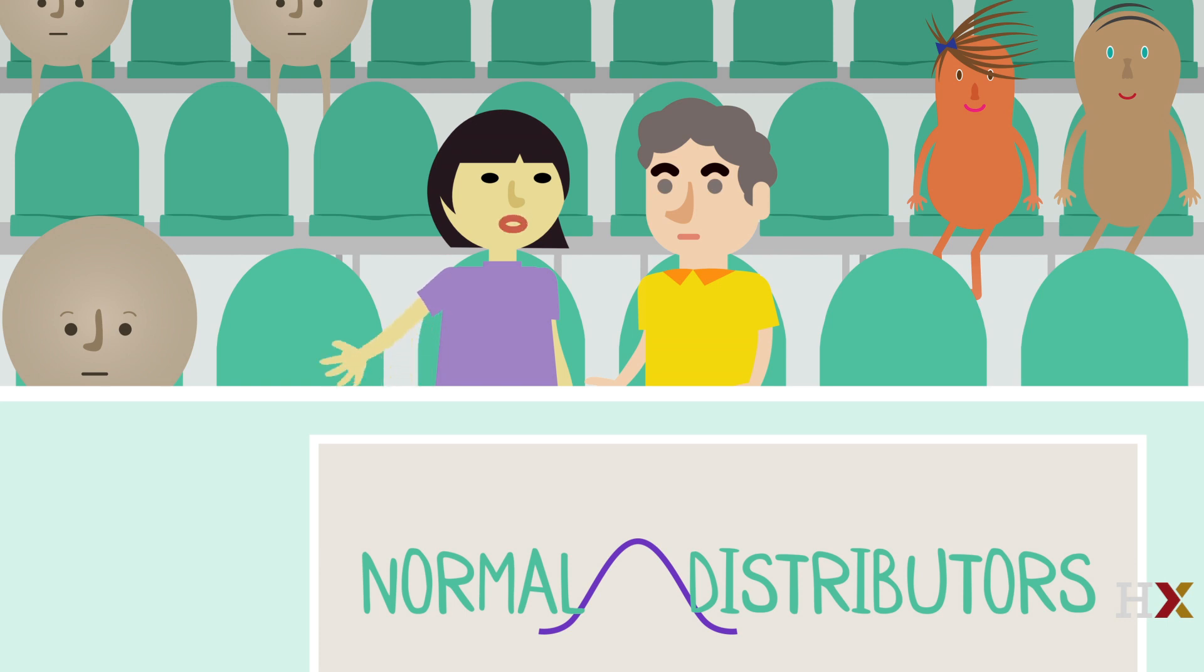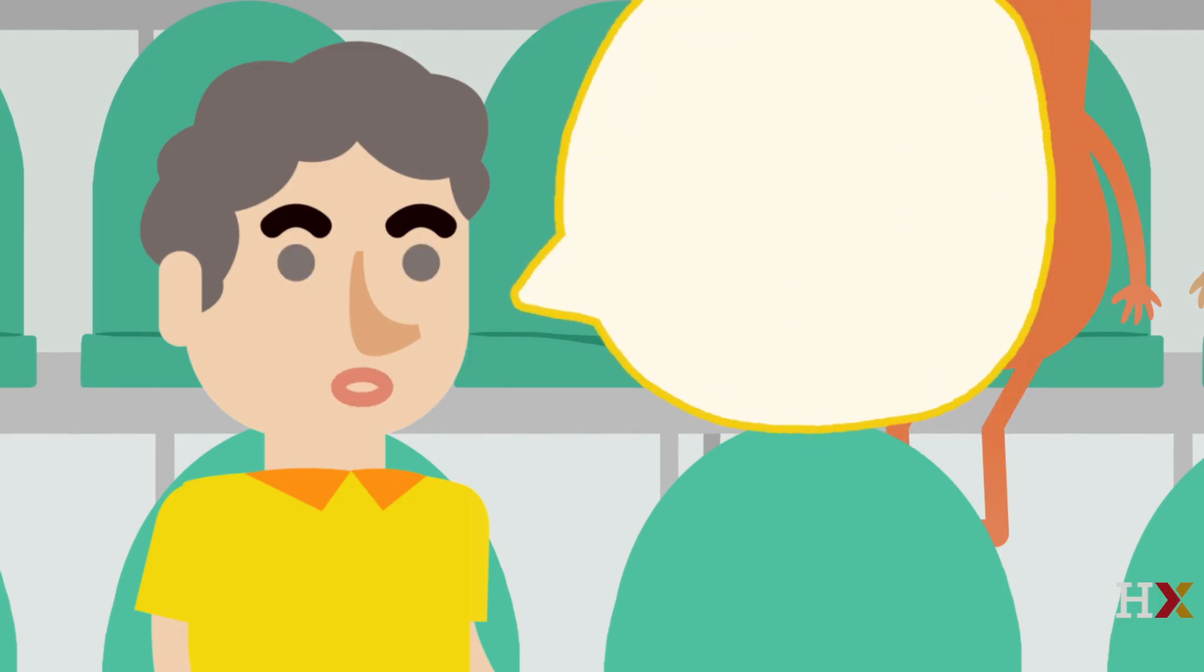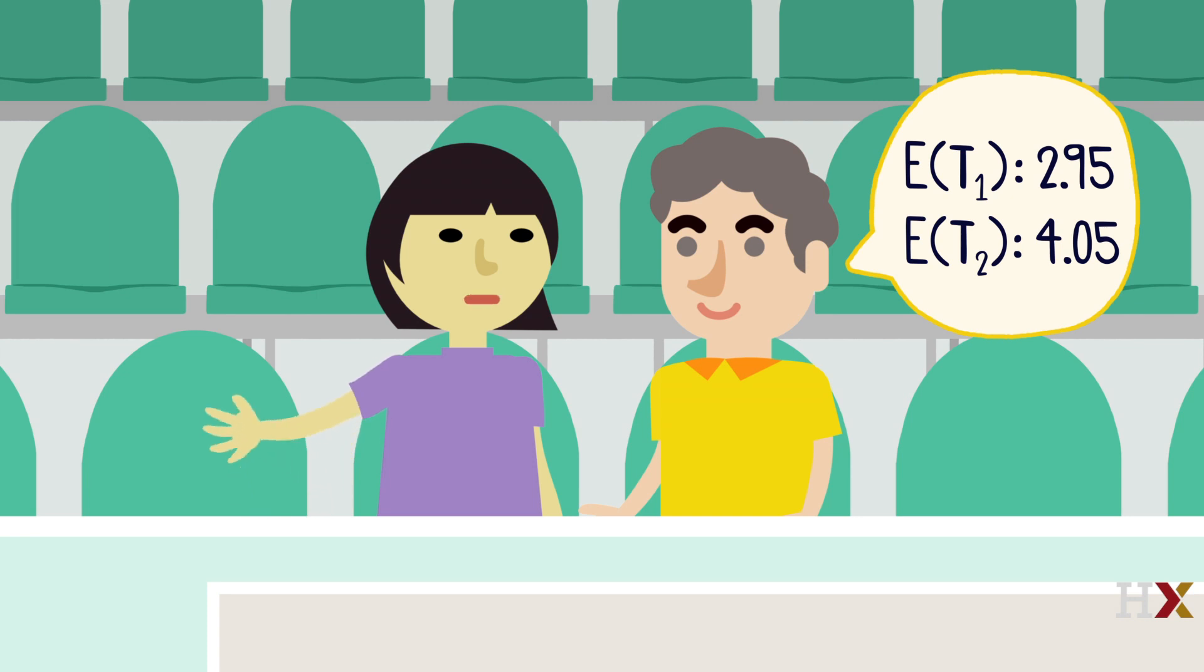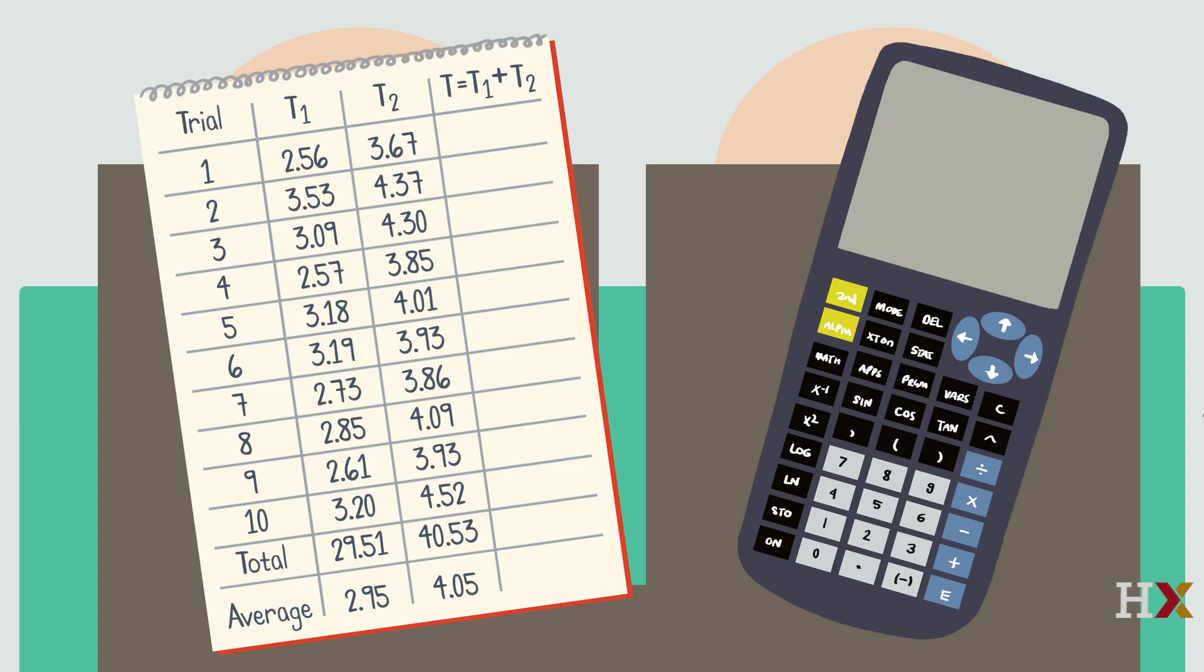Colin, so how did Lyra Loopski do, compared to what we expected, based on her past performances? Oh, I have a lot of data on that. In the past, her average T1 time was 2.95 seconds, and her average T2 time was 4.05 seconds. What about her average overall time, the average of T1 plus T2? Well, I haven't had time to compute that, Sylvia. Let's see.